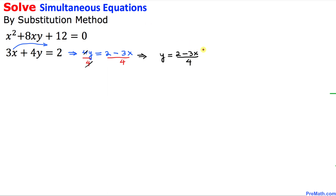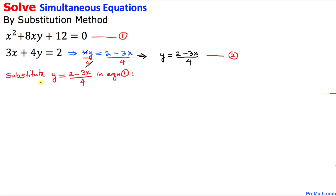I am going to call this equation number 2, and the very first equation I am going to call equation number 1. In the next step, we are going to substitute y equal to (2 minus 3x) divided by 4 from equation 2 into equation number 1. Wherever we see y, we are going to replace it by this y quantity.